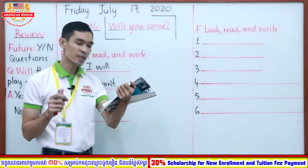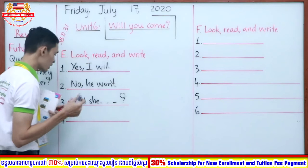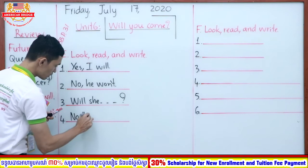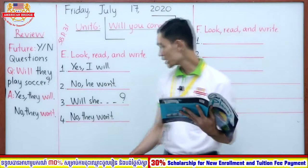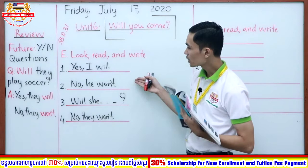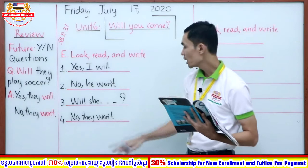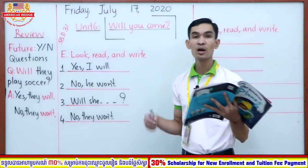How about number four? 'Will they sing? No...' — you speak 'won't,' right? 'No, they won't.' They will play new music. So now we finish part E. You can check your answer again. Number two: 'he won't.' Number three: 'Will she?' And number four: 'they won't.'